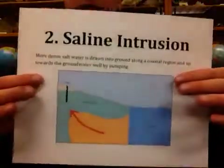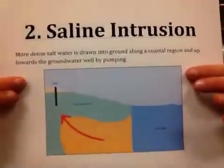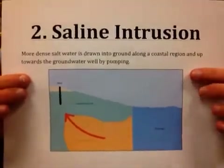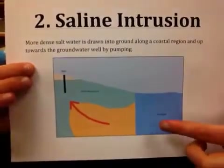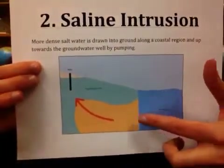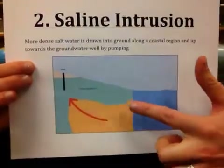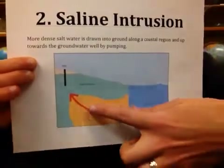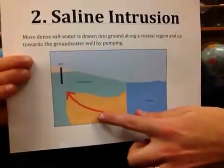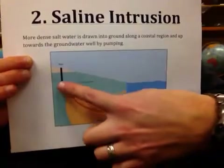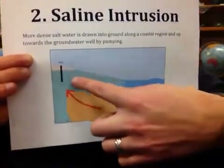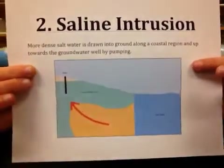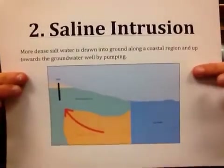In a coastal environment, you could be looking at something called a saline intrusion. More dense salt water — here we have an example of the ocean — is drawn towards the well and into the ground. As we're pumping, it's drawn up towards the well. If the pump rate is too fast, the salt water will actually reach the well, and instead of pumping fresh water sitting on top, we'll be pumping salt water, which we cannot use. That could be a very bad thing.